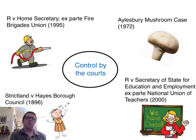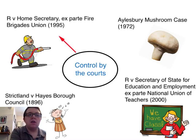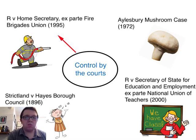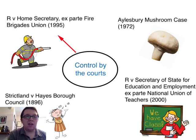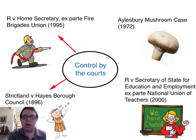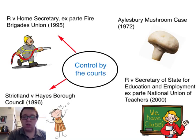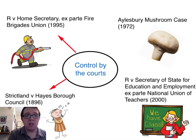Let's look at some case examples of courts controlling statutory instruments deemed ultra vires through judicial review. The first case is the Crown and Home Secretary Ex Parte Fire Brigades Union 1995. This involved changes made by the Home Secretary to the Criminal Injuries Compensation Scheme, which were held to have gone beyond the power initially set out to the government minister in the Criminal Justice Act 1988 — which was the enabling act for that particular power. Secondly, Strickland and Hayes Borough Council 1896: an unreasonable regulation was made because a by-law prohibited the singing or reciting of any obscene song or ballad and the use of obscene language in general. However, it was deemed unreasonable because it meant these actions couldn't be taken not only in public but also in private.